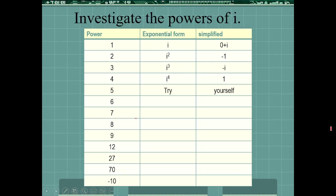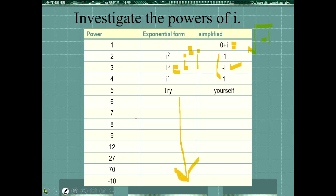Now let's deal with iota's powers — this is the most important topic for MCQs. Iota to the power 1 is just iota. Iota squared is minus 1. Iota cubed is iota-squared times iota, which is minus 1 times iota = minus iota. Iota to the power 4 is minus 1 times minus 1 = plus 1. So iota repeats with a cycle of 4 values: iota, −1, −iota, +1.